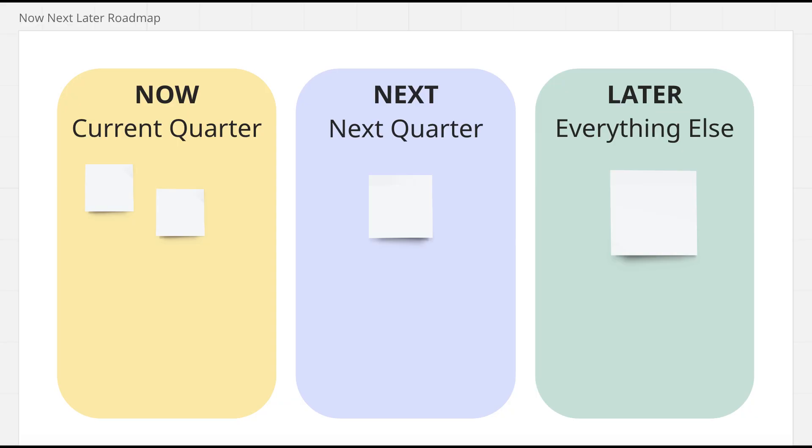I usually try to use a now-next-later roadmap. For me, now is what we are working on in the current quarter, next is the next quarter, and later is everything else. I have never seen a detailed plan longer than one quarter that stood the test of time. Usually those plans are one week after we define them and they are already obsolete.